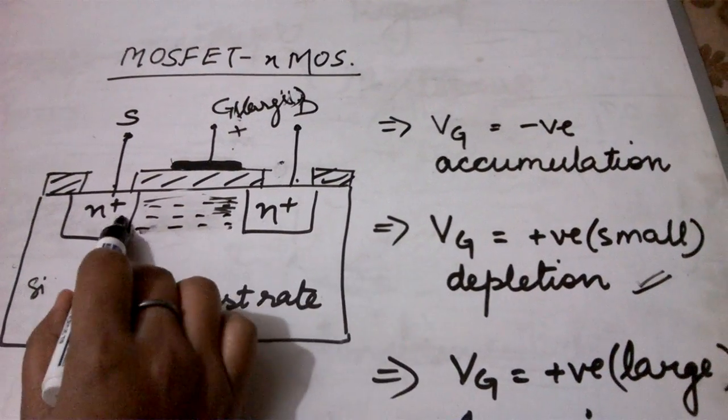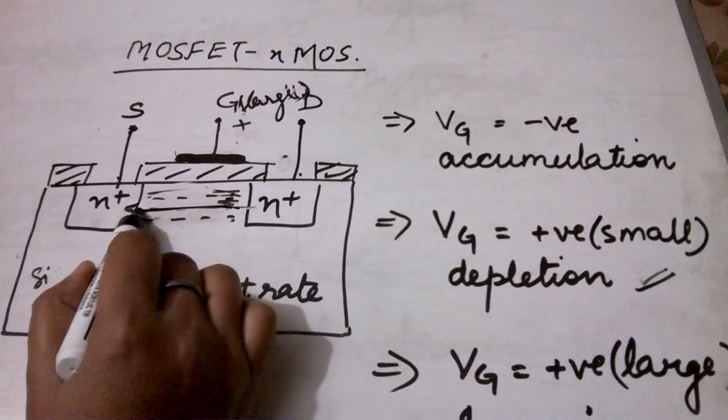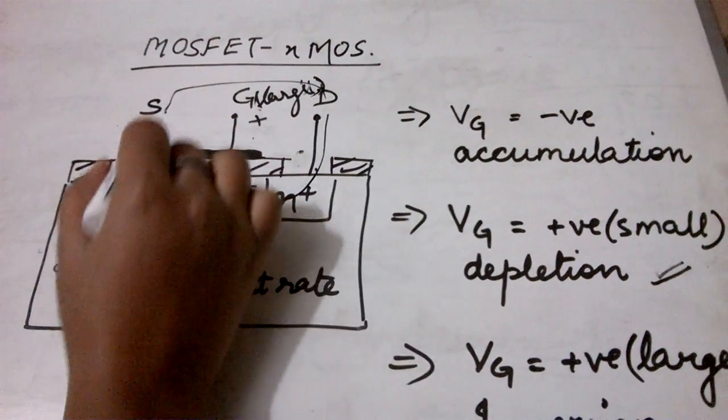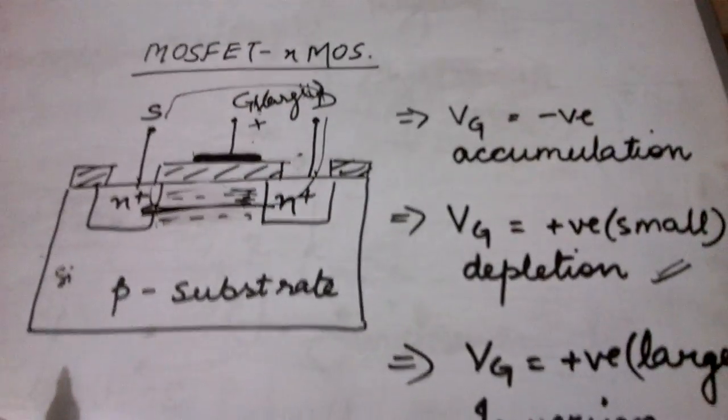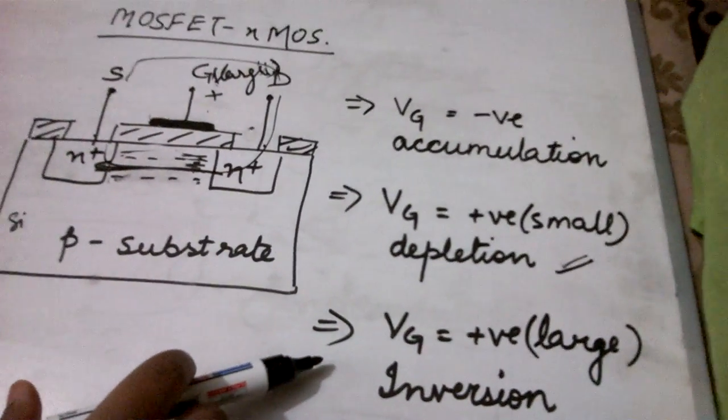So the source and drain get a path for conduction through these electrons. And hence this conduction path is established and a drain current is established in the MOS device. So this is your last mode that is the inversion mode.